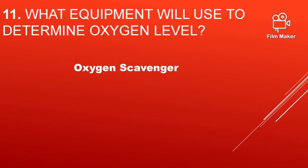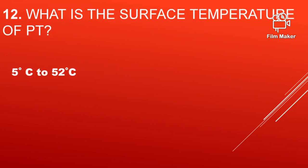What equipment will you use to determine oxygen level? That is an oxygen scavenger. Normally we have to check the oxygen level when we do back purging for alloy material. The back purging gas must have an oxygen level of less than one percent, which should be ensured by an oxygen scavenger.